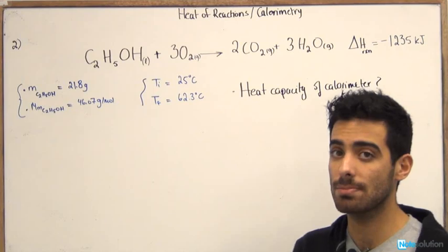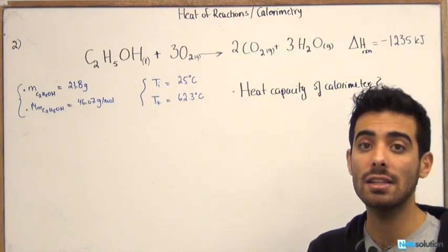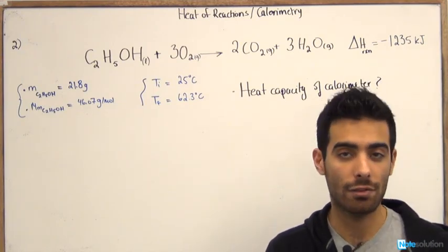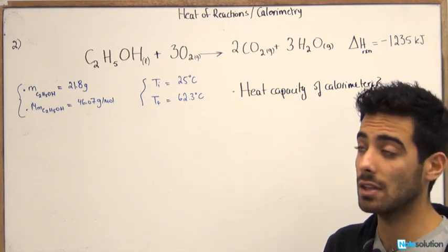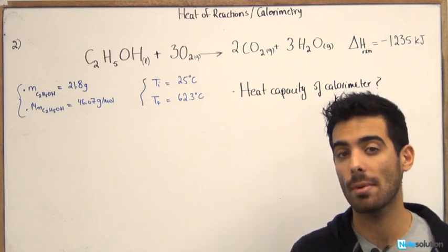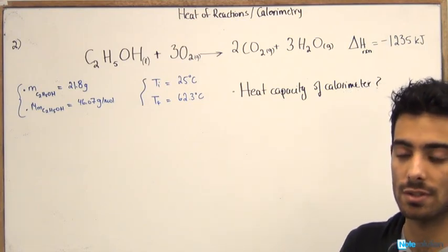So we usually use bomb calorimeters either to find the heat of reaction of combustion reactions mainly, or we can also find the actual heat capacity of the calorimeter from such reactions.